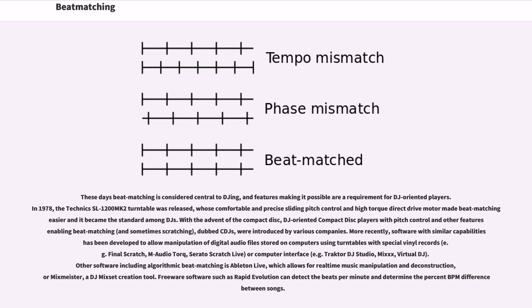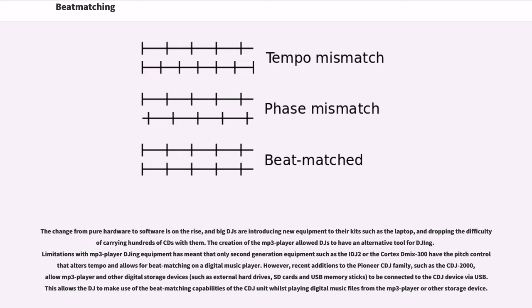Other software including algorithmic beatmatching is Ableton Live, which allows for real-time music manipulation and deconstruction, or Mixmeister, a DJ mix set creation tool. Freeware software such as Rapid Evolution can detect the beats per minute and determine the percent BPM difference between songs.